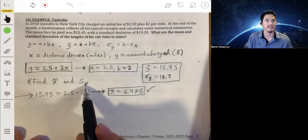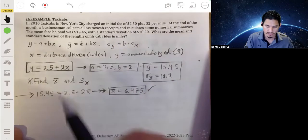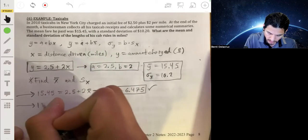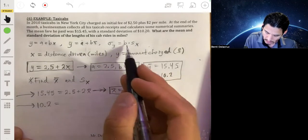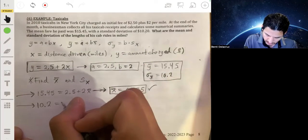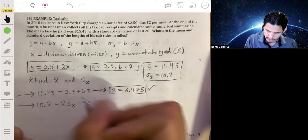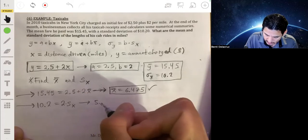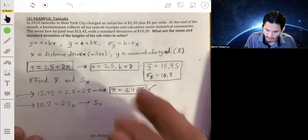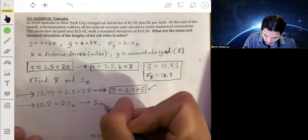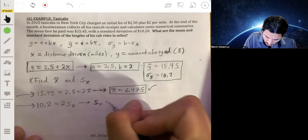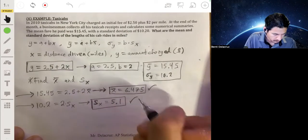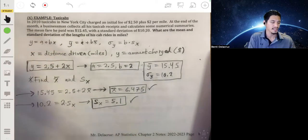And then we solve for standard deviation of x with this equation. We just go ahead and set this equal to 10.2. 10.2 equals 2 times the standard deviation of x. So we just divide 10.2 by 2. And we'll get that standard deviation of x is 5.1. And that's it.